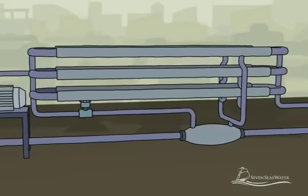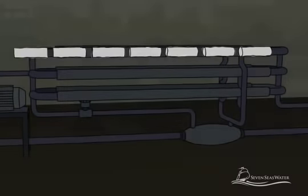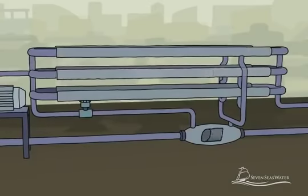The reverse osmosis membranes are then enclosed in a fiberglass shell. The membranes are connected end-to-end, usually six to seven membranes together, and housed in vessels that are built to withstand pressures up to 1,200 psi.